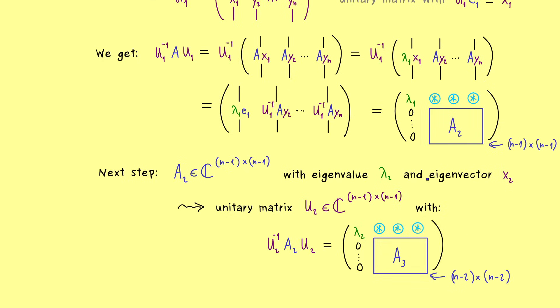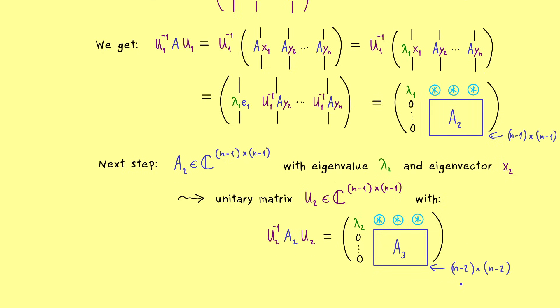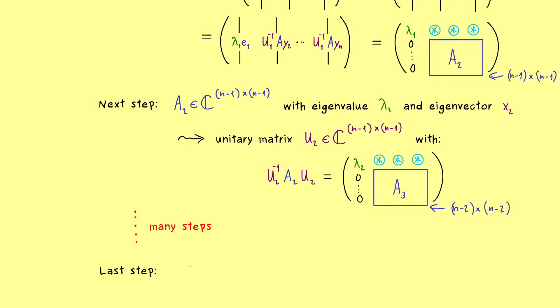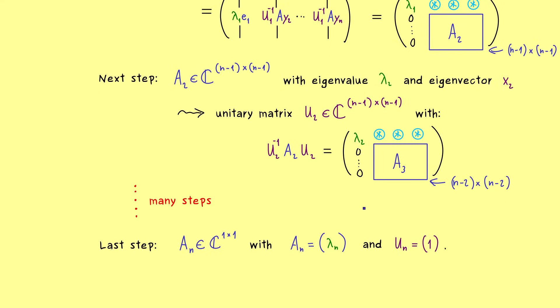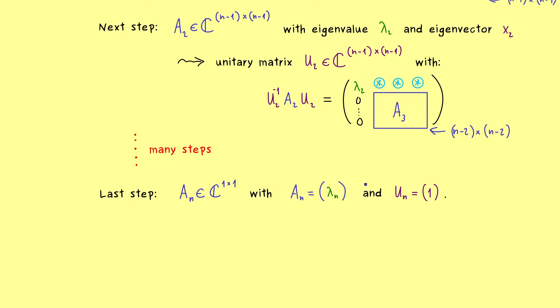And by the same reasoning as before, we have a matrix where lambda_2 is in the corner and a reduced matrix A_3. So there the dimension is already at n minus 2. Hence we can repeat the whole thing many times until we reach the dimension 1 times 1. So the last step is just A_n, which is a 1 times 1 matrix. So the only entry there is the eigenvalue lambda_n and the unitary matrix U_n can be chosen as 1. In other words, in this case we don't have to do anything anymore. So you see, the proof to get our triangular matrix is almost finished. We just have to formulate the correct unitary matrix U.